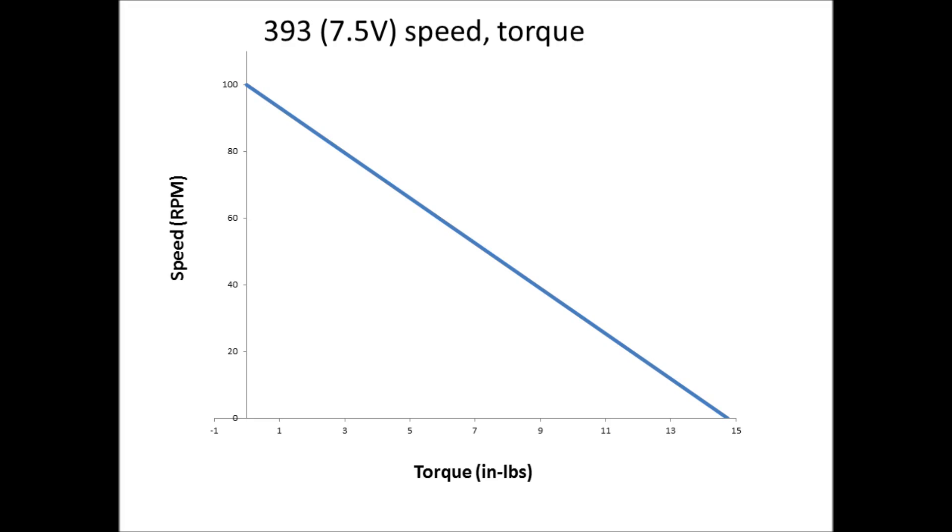For VEX motors the relationship between speed and torque is linear. A VEX 393 motor with the maximum control value of 127 has a voltage of 7.5 volts. At this voltage it has a maximum rotational speed of 100 RPM at 0 inch pounds of torque and a maximum torque of 15 inch pounds at 0 RPM.